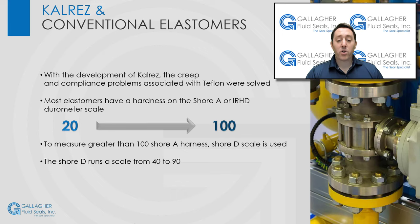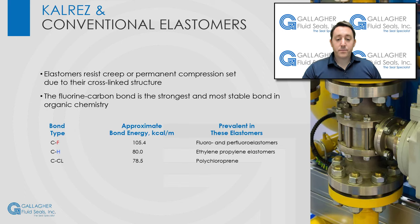Most conventional elastomers have a hardness on the Shore A or IRHD durometer scale running from 20 to 100. To measure greater than 100 Shore A hardness, the Shore D scale is used. The Shore D instrument has a penetrator, not an indenter, and runs a scale from 40 to 90. All plastics are at the high end of the Shore D range, whereas CalRez compounds range from 65 to 95 Shore A, as do most conventional elastomers. Since hardness is similar to compression modulus, the softer the material, the more it conforms, and the lower the compressive force required to reach a given deformation. Elastomers resist creep or permanent compression set due to their cross-linked structure, which prevents the molecular chains from tearing apart under stress.